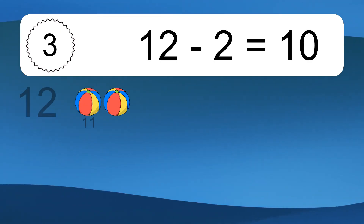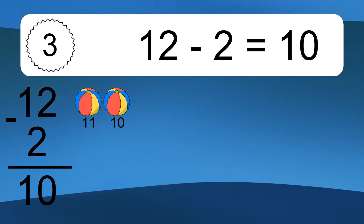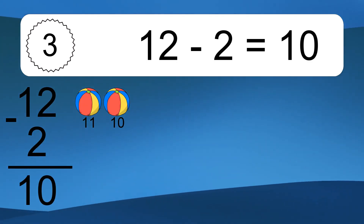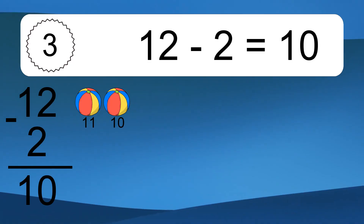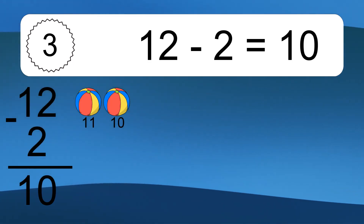12 minus 2 equals what? 12 minus 2 equals 10. Let's count it: 11, 10.